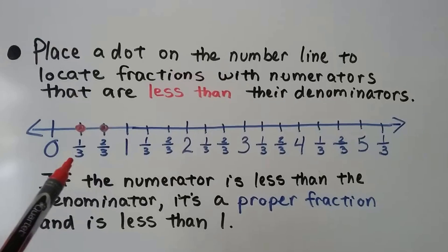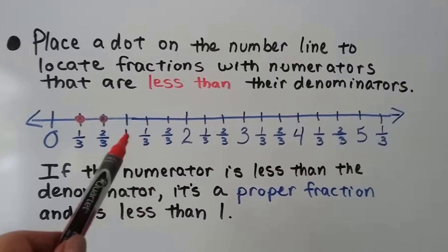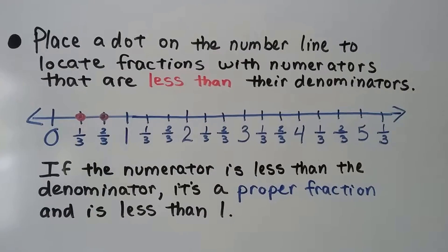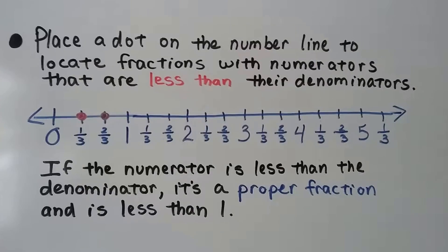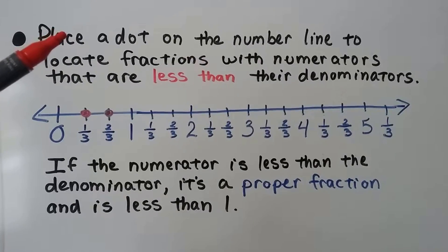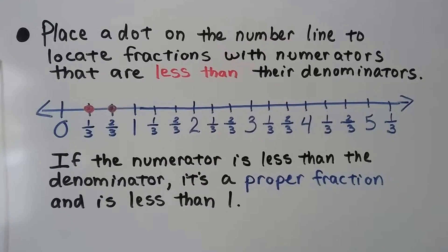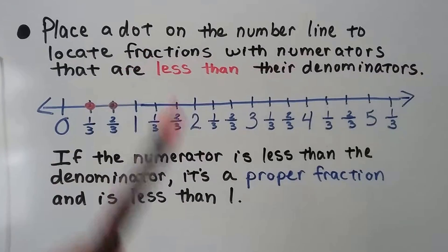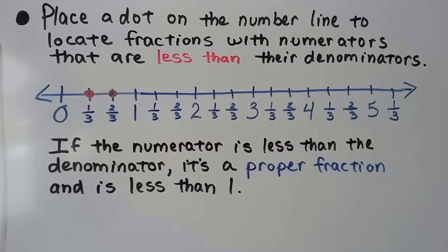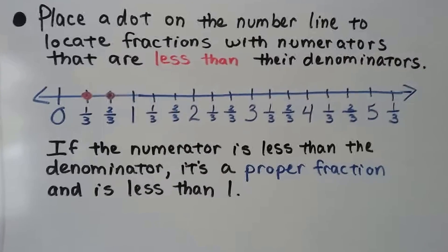The only ones that will fit is the 1 third and 2 thirds. Now I know you see them here, but that would be a mixed number, 1 and 1 third. So that wouldn't just be a fraction. If it said mixed numbers, then these would count. But it doesn't say mixed numbers, it says fractions. So that means proper fractions. Tricky wording, huh?